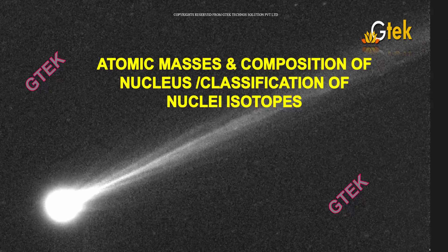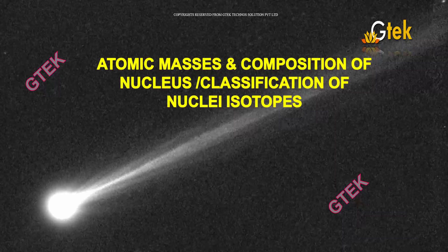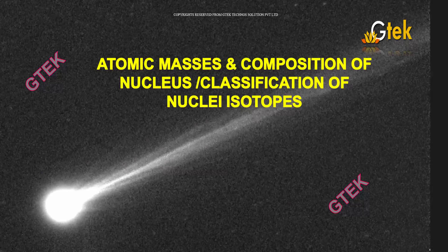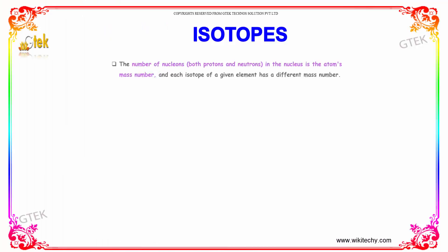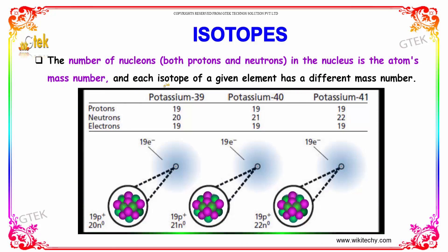Let's talk about the atomic masses and composition of the nucleus, and classification of nuclei isotopes. The number of nucleons — both protons and neutrons — in the nucleus is the atom's mass number. Each isotope of a given element has a different mass number.